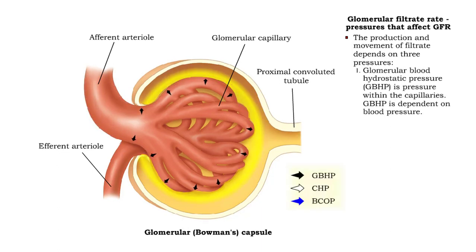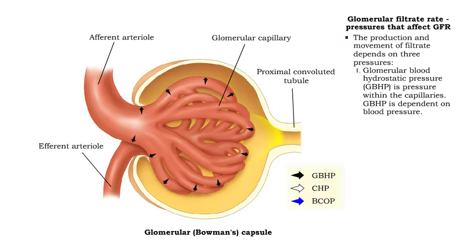The pressure driving filtrate production and movement is called glomerular blood hydrostatic pressure. Glomerular blood hydrostatic pressure is the pressure within the capillaries and is dependent on blood pressure.